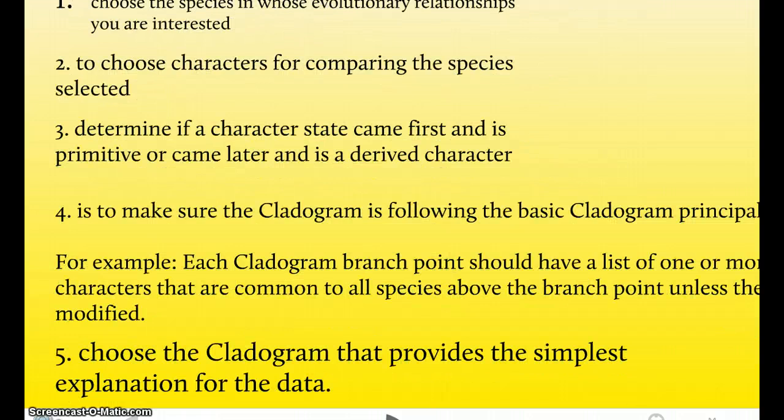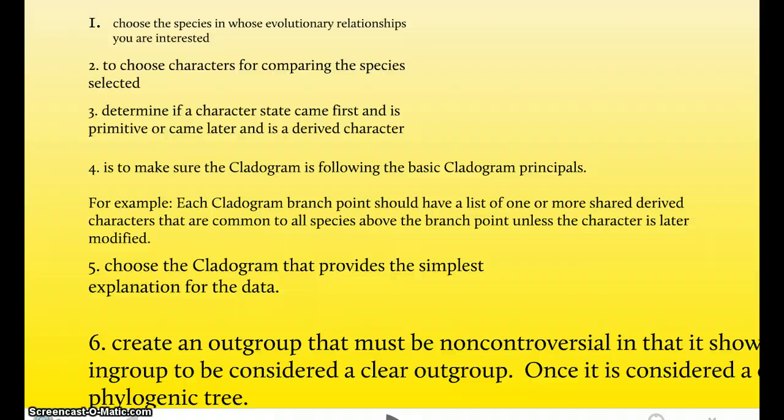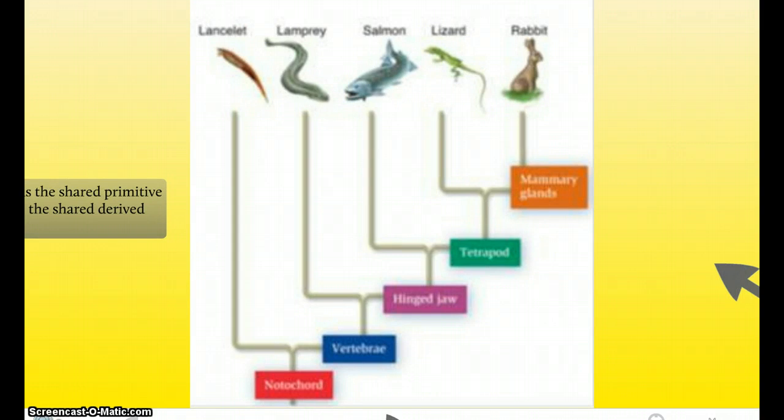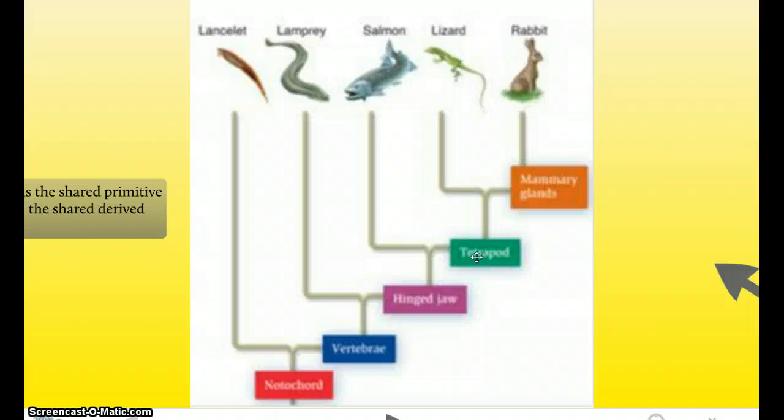Step four, make sure the cladogram is following the basic cladogram principles. I believe there are three principles, but I have one in the example below, and that one principle is that each cladogram branch point should have a list of one or more shared derived characters that are common to all species above the branch point, unless the character is later modified. So what that example is saying is, if we go back all the way to this guy, notice how it goes up and then it branches out. Goes up, branches out. Goes up, branches out. So those are branch points, and at each branch point it's said to have a character labeled. So at one branch point you have a nodal cord, another branch point a vertebrae, branch point a hidden jaw. That's what it's talking about.